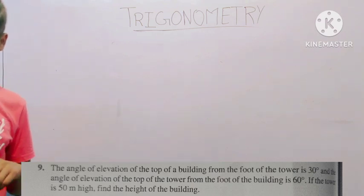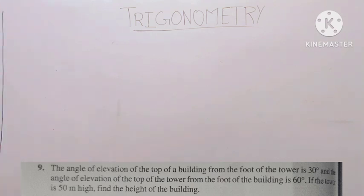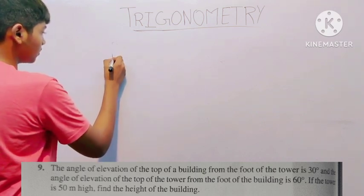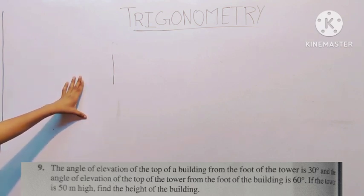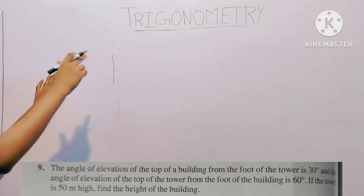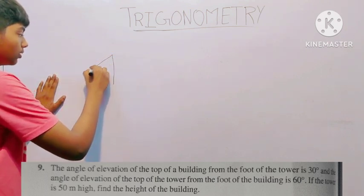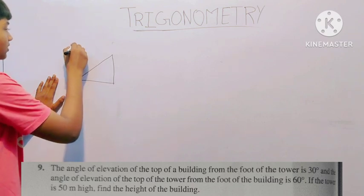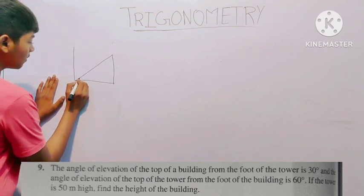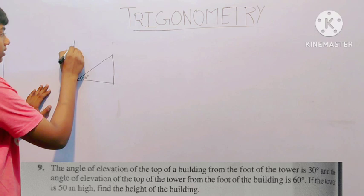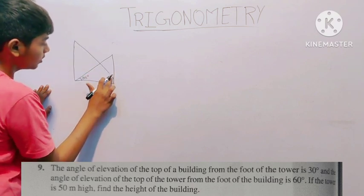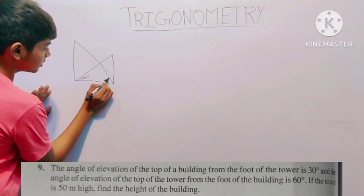The question is: the angle of elevation of the top of the building from the foot of the tower is 30 degrees. And the angle of elevation of the top of the tower from the foot of the building is 60 degrees.